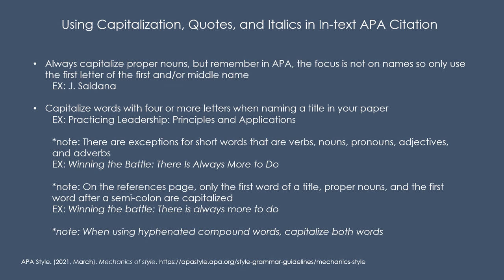Capitalization is a little bit different in APA style. Since the focus is on dates, only use the first initial of the first name and the middle initial, if there is one, of the author. Capitalize words with four or more letters in a title. There are some exceptions for certain words in that rule — check the APA website for specifics. On the References page, capitalize the first letter of the first word in a title, and then the first letter of the first word after a semicolon, and do capitalize proper nouns.